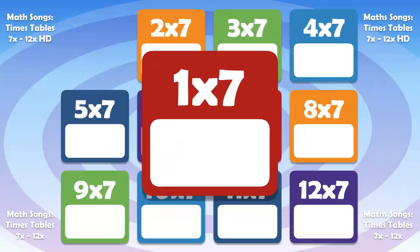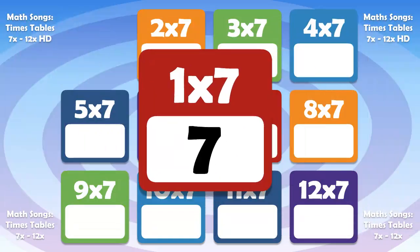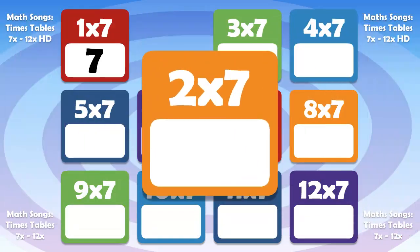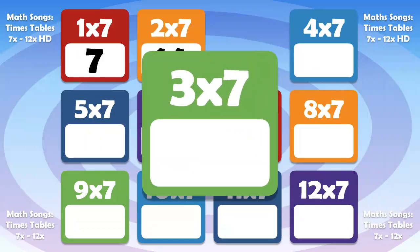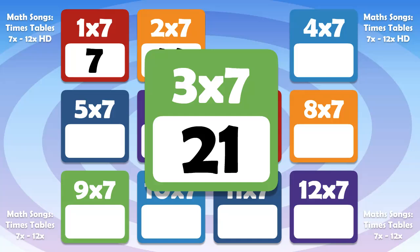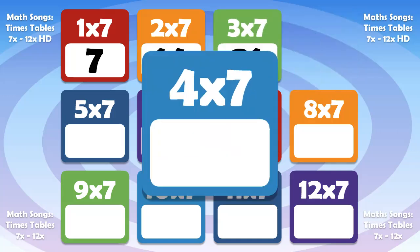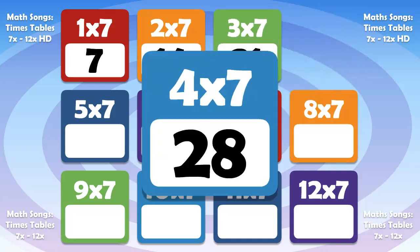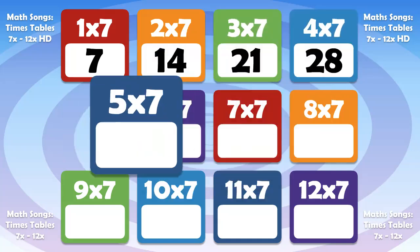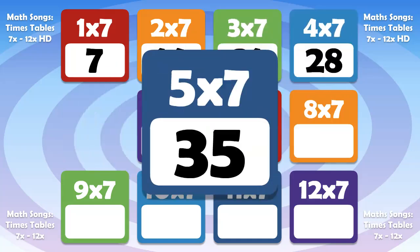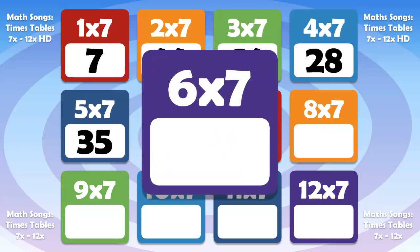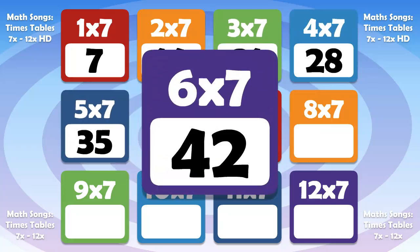1 times 7 is 7. 2 times 7 is 14. 3 times 7 is 21. 4 times 7 is 28. 5 times 7 is 35. 6 times 7 is 42.